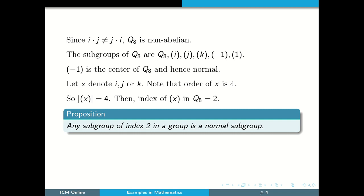Recall the result that any subgroup of index 2 is a normal subgroup. Thus the cyclic subgroup generated by x is normal in Q8.